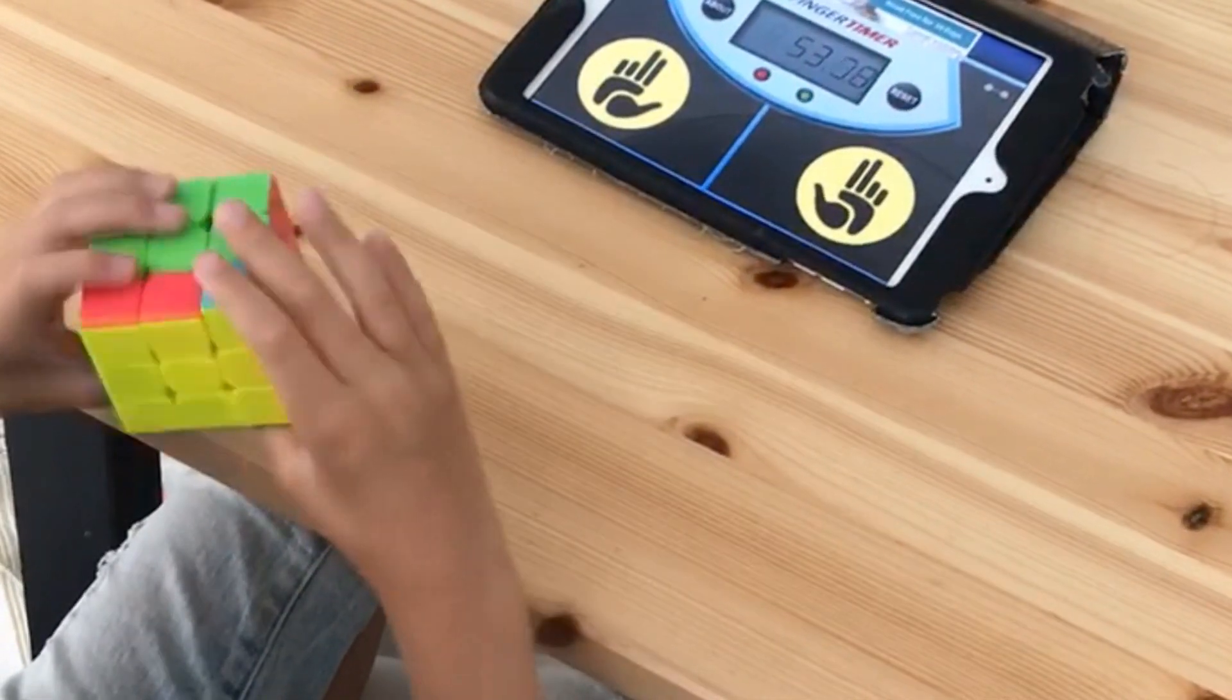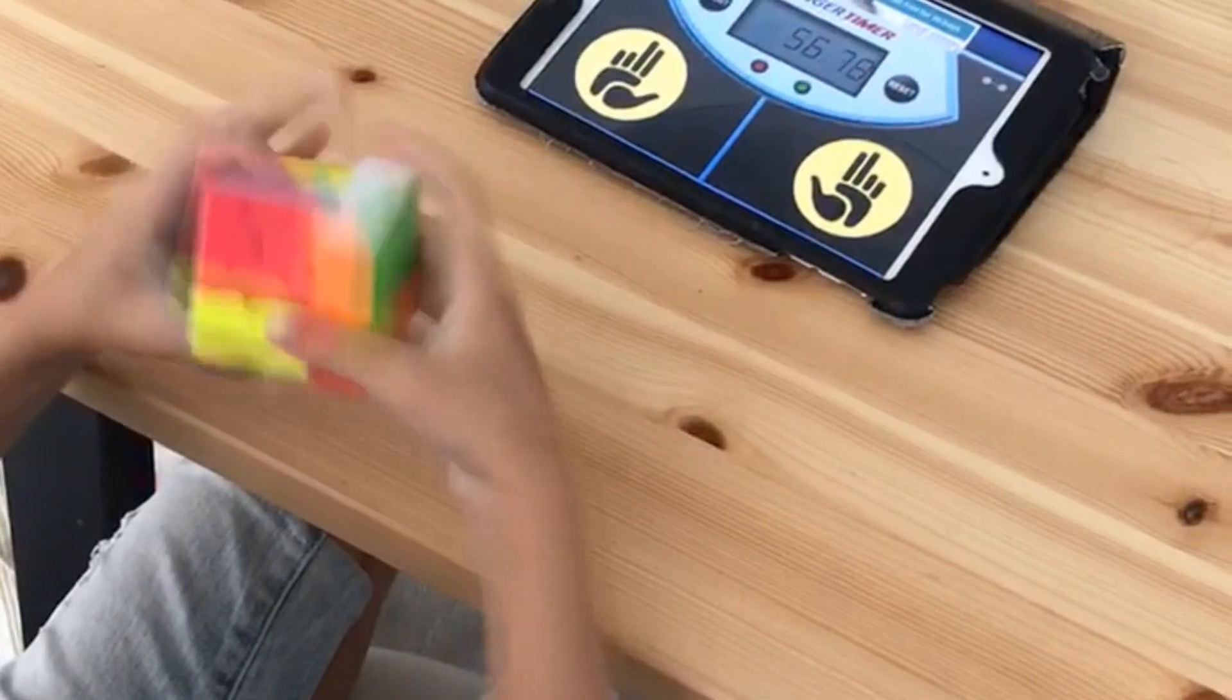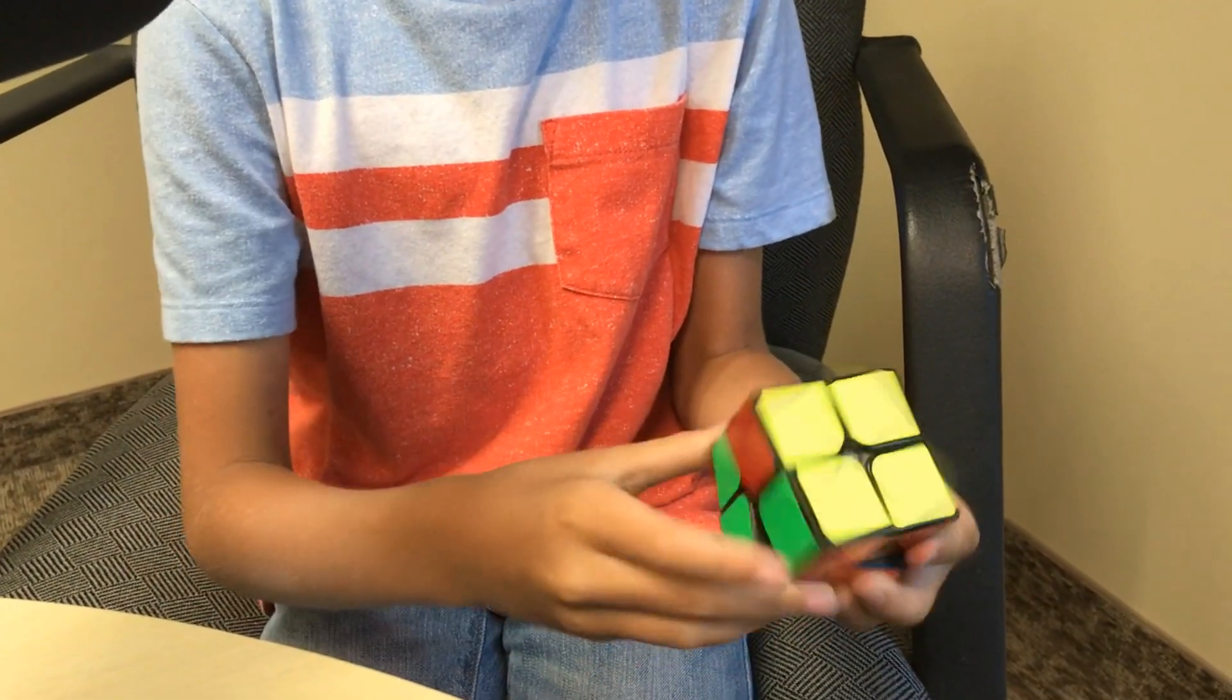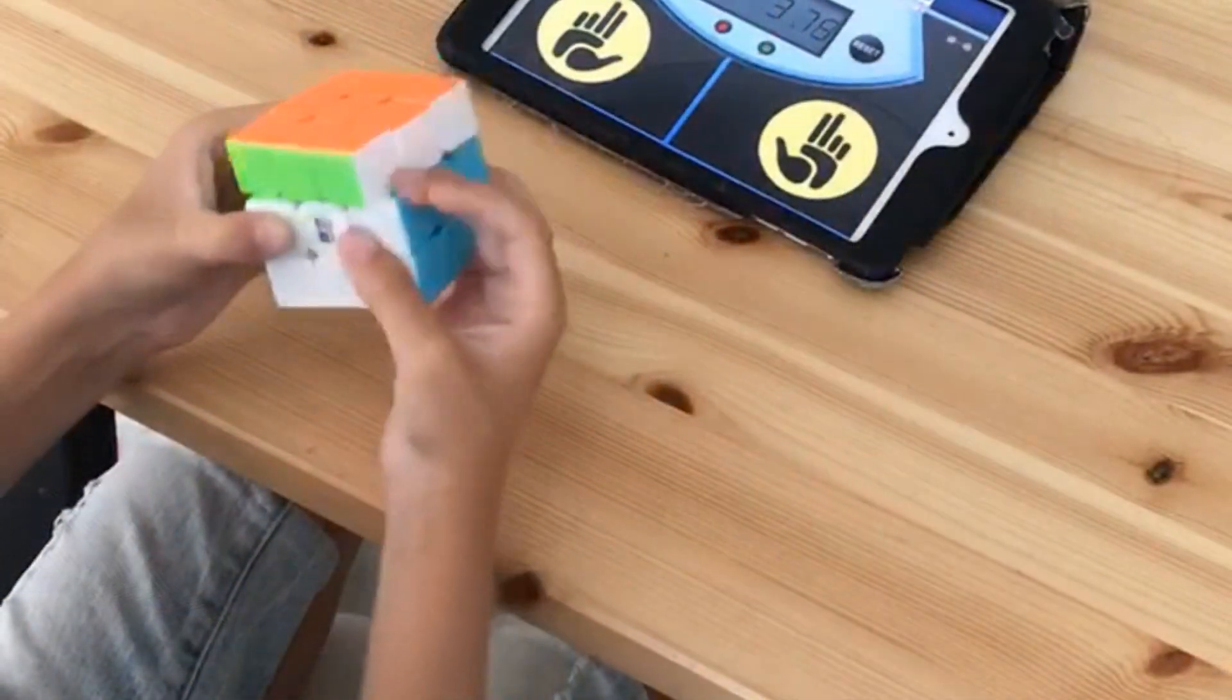Penner often watches the pros online that have perfected their times. On the 2x2 cube, Penner has perfected his solving technique to just four seconds. However, the world record is less than a single second.